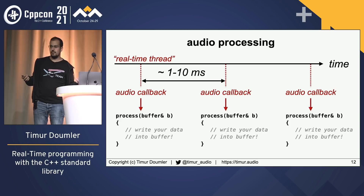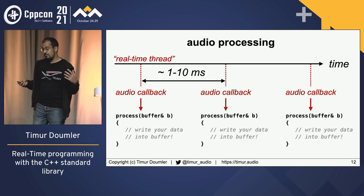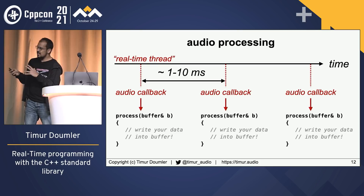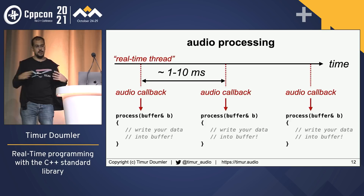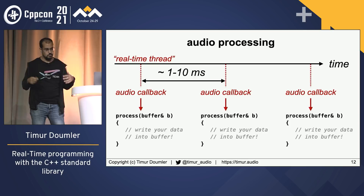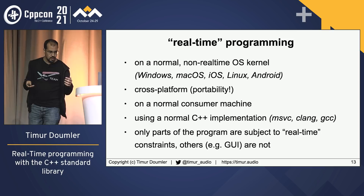This use case is a little different from other low-latency use cases like high-frequency trading. In HFT, it really matters if something takes one microsecond versus 1.1 microseconds — you want to be the fastest. In this audio scenario, you don't care that much if it takes 10 versus 11 microseconds, but you do care that it takes no more than 11 microseconds 100% of the time — not one-in-a-million times 1000 microseconds. So we need to optimize for the worst case, not the average case.